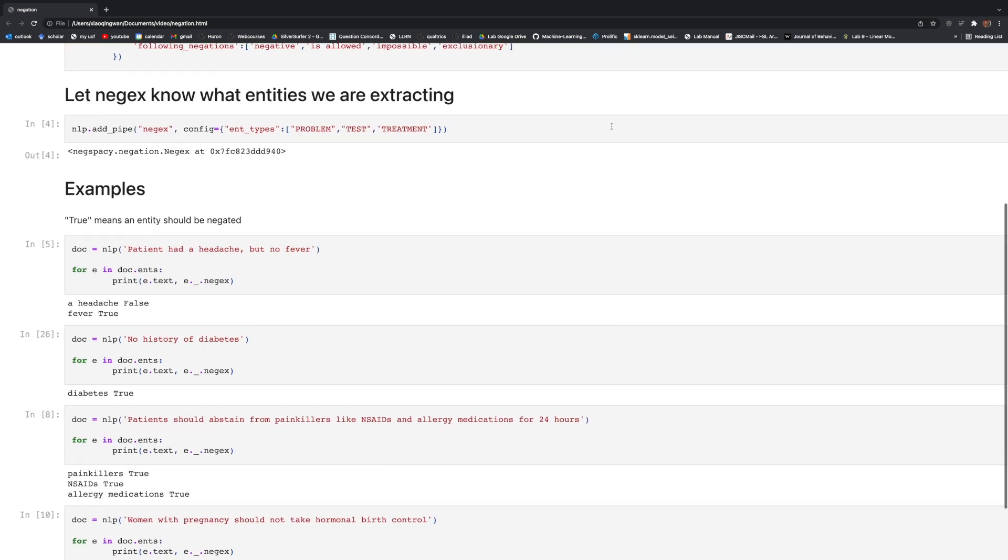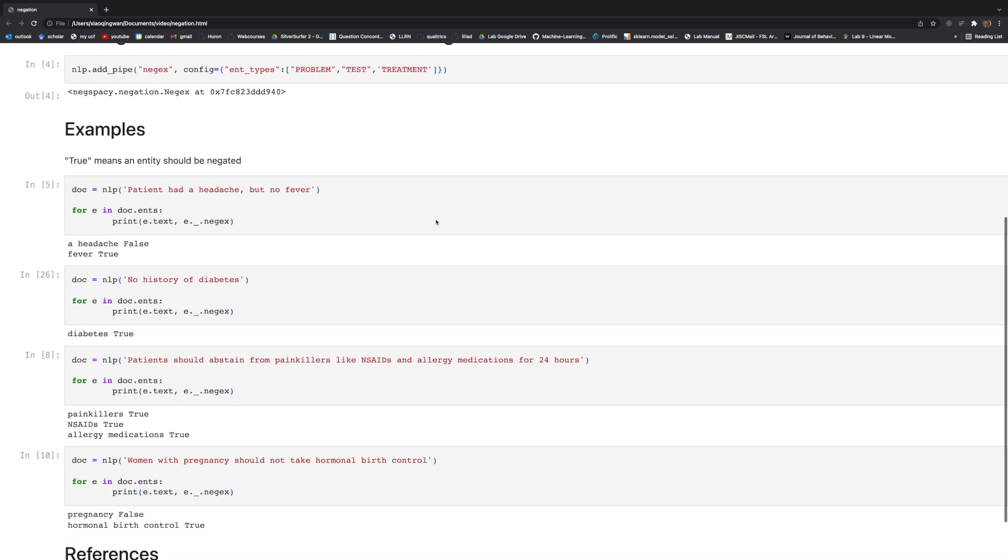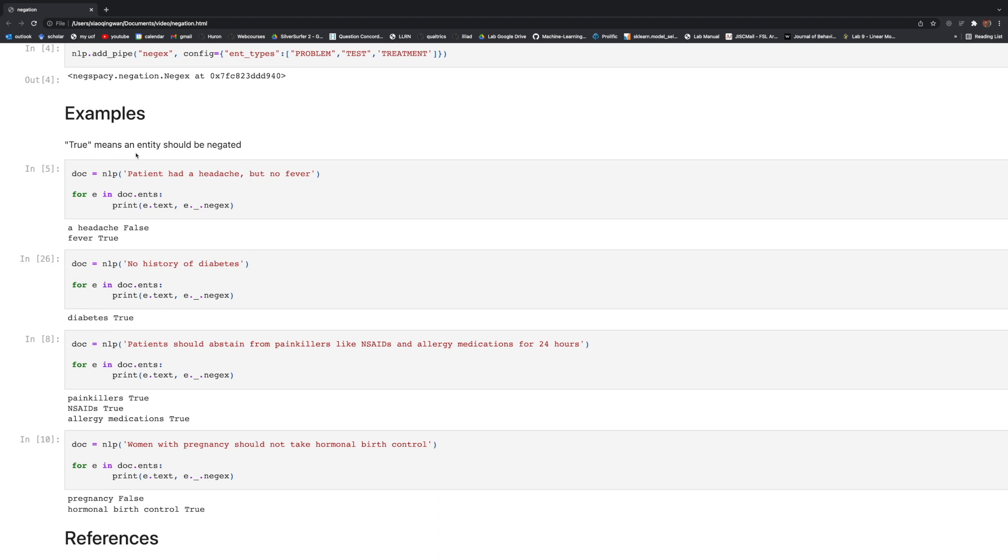Next, I'm going to let NegX know what entities we're extracting. So in particular, we are looking for medical problems, medical tests, and medical treatments. And let's take a look at an example. If the output is true, it means that entities should be negated. Let's bring back the old example: patient had a headache, but no fever. We saw that headache is a medical problem that's detected, and it shouldn't be negated. However, fever comes after a preceding negation term, and therefore it should be negated.